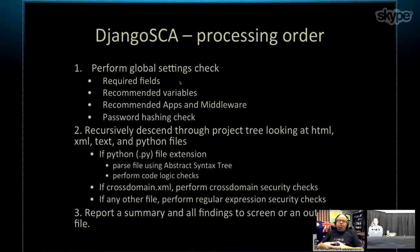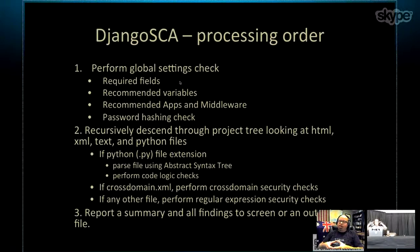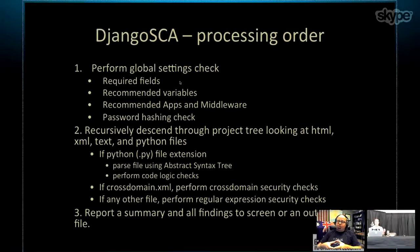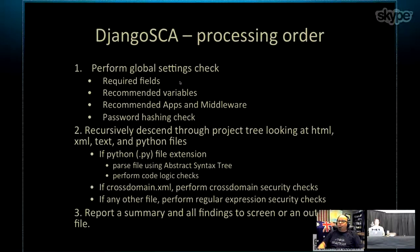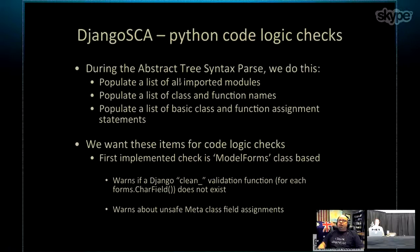The settings check covers required fields, recommended variables, recommended apps and middleware, and a password hashing check. The second phase is a recursive descent through the entire Django project, looking at HTML, XML, text, and Python files. Python files are parsed using the abstract syntax tree and code logic checks are performed. If there is a crossdomain.xml file, cross-domain security checks are performed; any other file undergoes regular expression security checks. Finally, a summary reports all findings to screen or an output file.